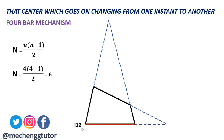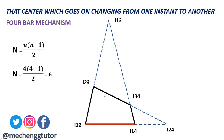The six instantaneous centers of the four-bar mechanism are: I₁₂ between links 1 and 2; I₁₃ between links 1 and 3, found where extensions of links 2 and 4 meet; I₁₄ between links 1 and 4; I₂₃ between links 2 and 3; I₂₄ between links 2 and 4, found by extending links 2 and 1; and I₃₄ between links 3 and 4.